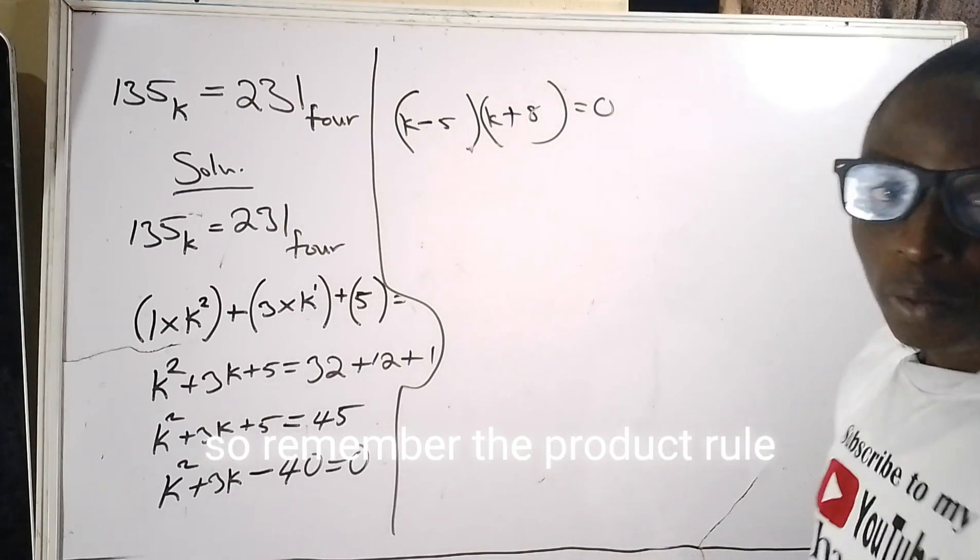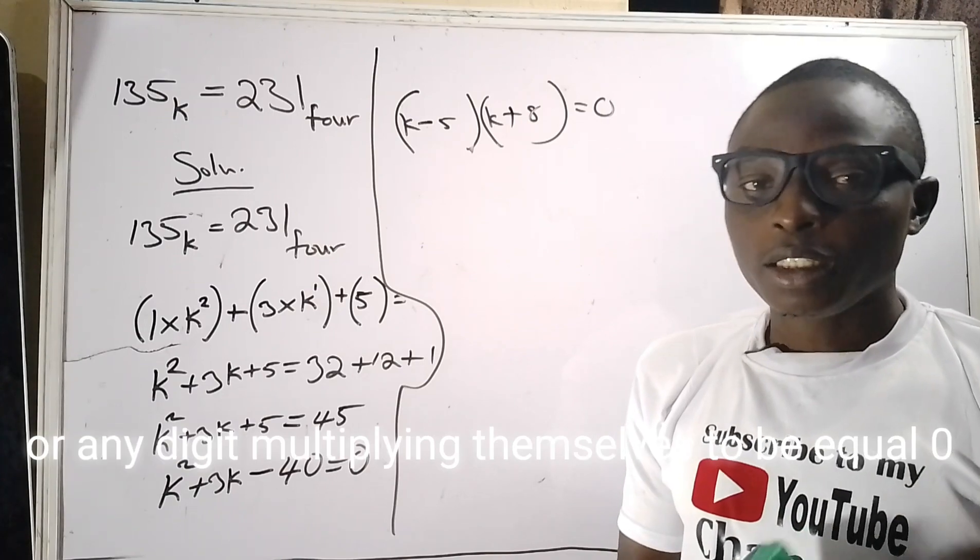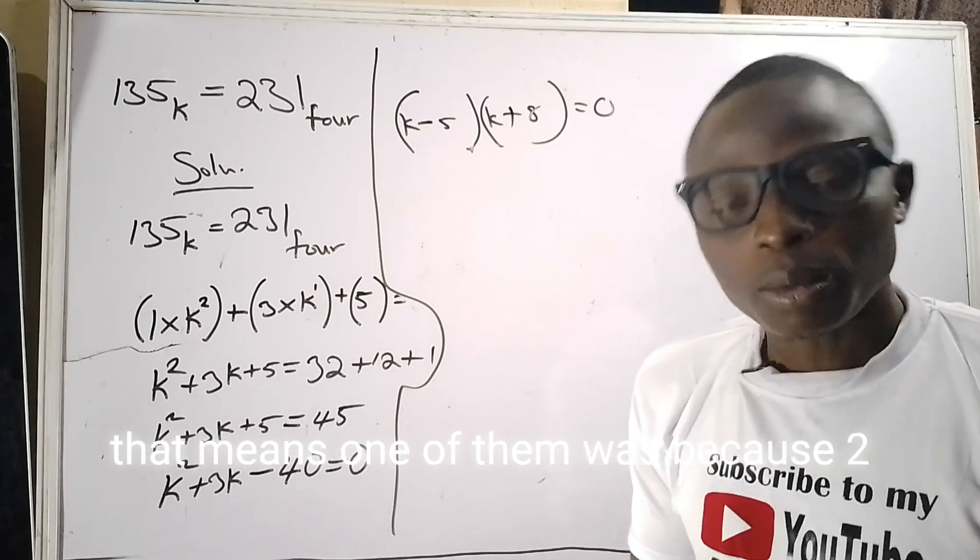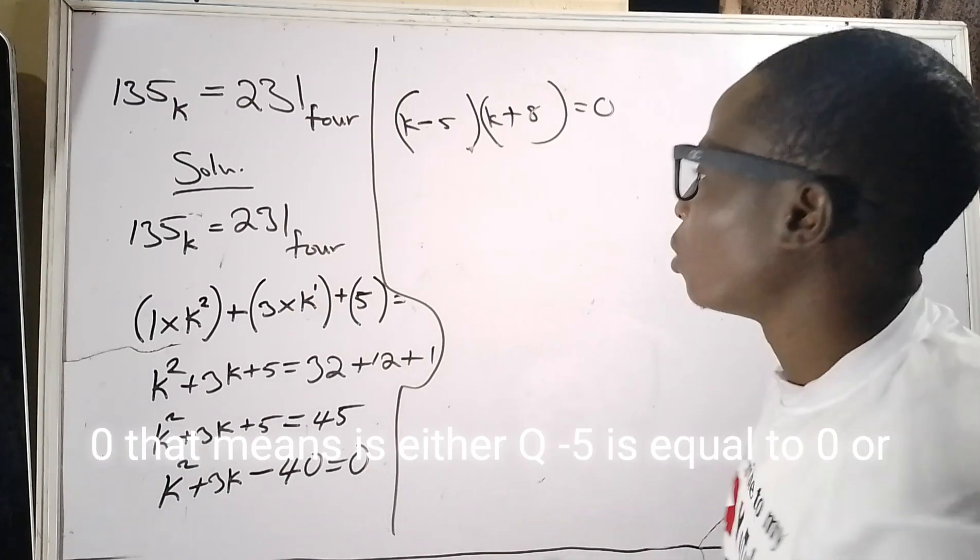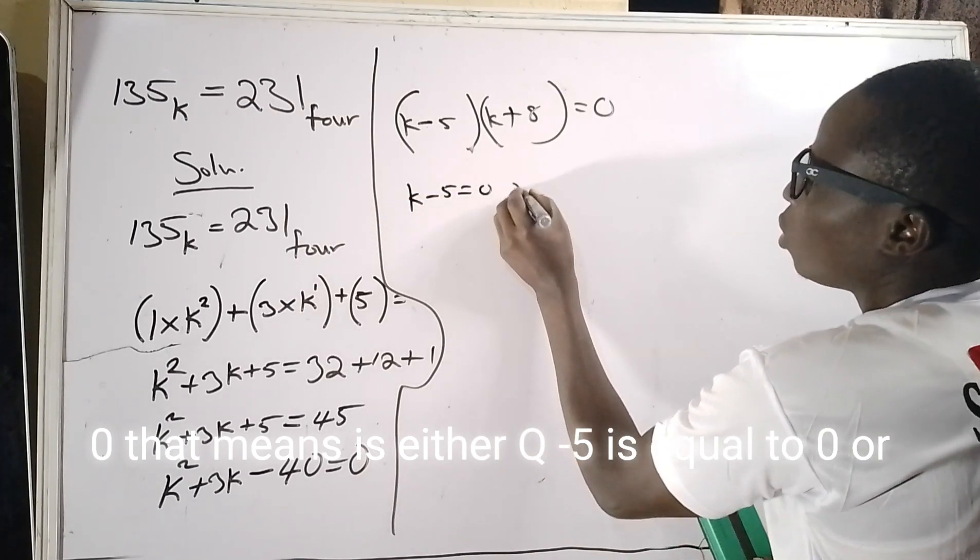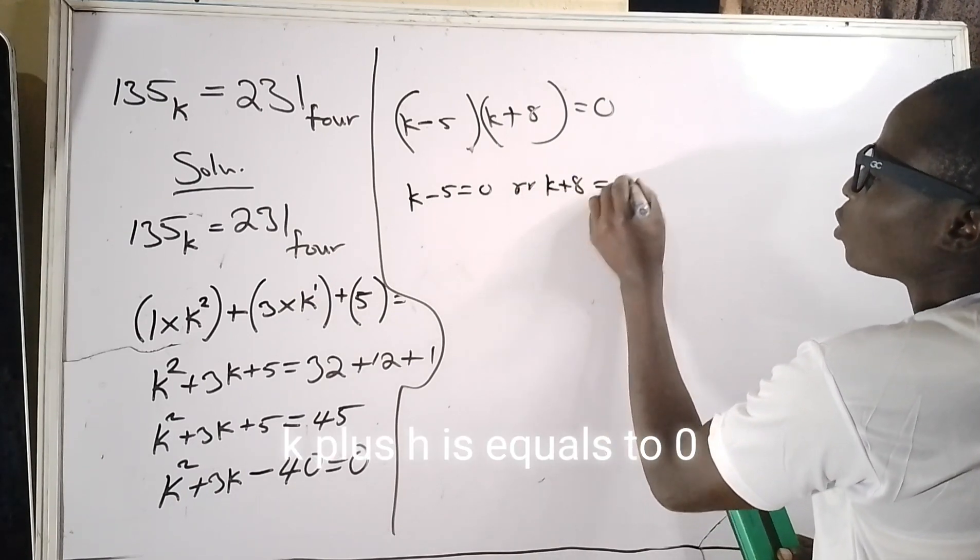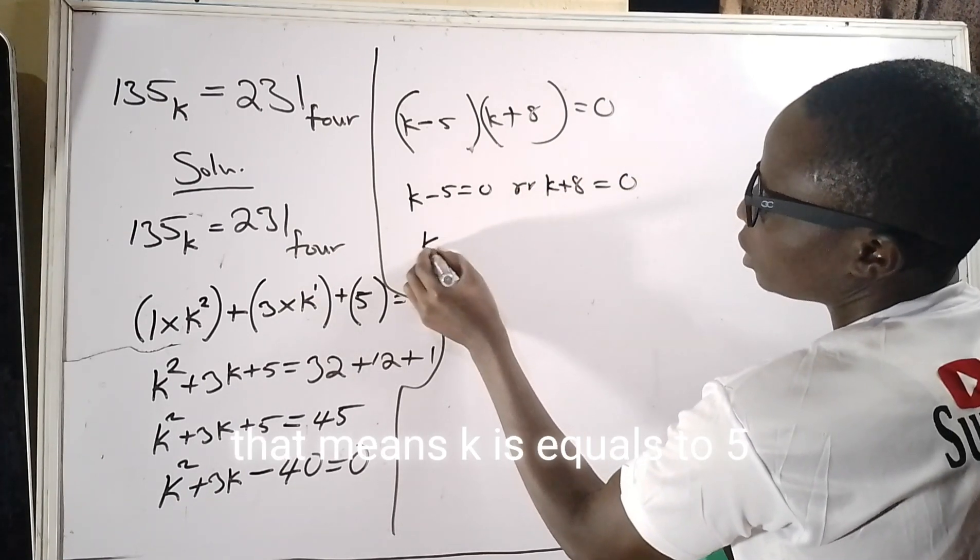So remember the product rule: when two numbers or two alphabets or any digits multiplying themselves equal zero, that means one of the two. So k minus 5 equals zero, or k plus 8 equals zero. That means k equals 5 or k equals minus 8.